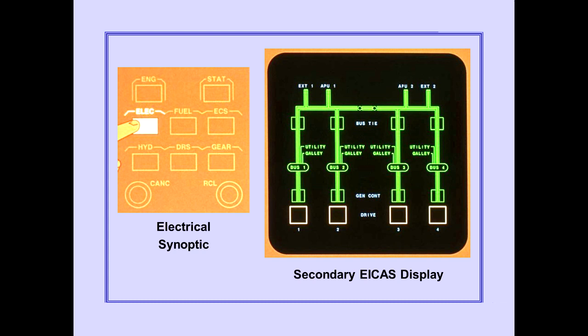Pushing the electrical synoptic switch on the ICAST display select panel displays the electrical synoptic on the secondary ICAST display. The display provides real-time information about the status of the various buses, relays, and power sources.